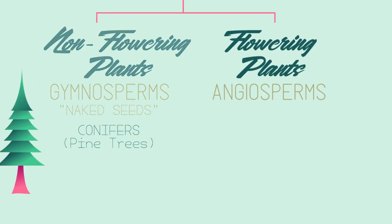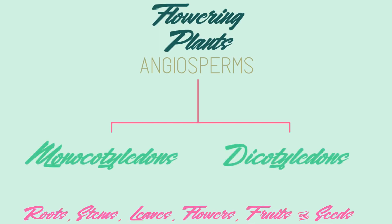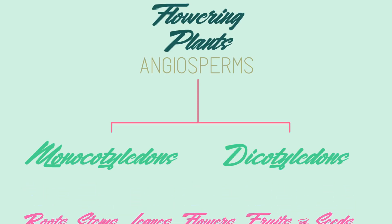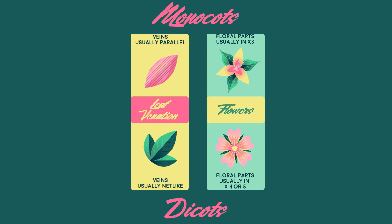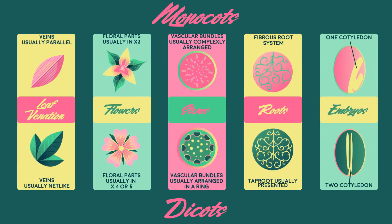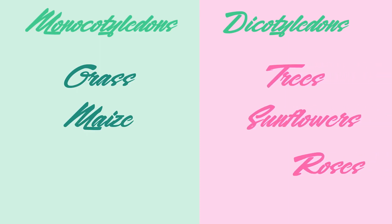Now for angiosperms — the largest and most diverse group in the plant kingdom. Angiosperms consist of two major groups: monocotyledons and dicotyledons. These groups differ with respect to their roots, stems, leaves, flowers, fruits, and seeds. Some observable differences are that monocots have parallel veins and petals in groups of three, whereas dicots have net-like veins and petals in groups of four or five. Grass and maize are examples of monocots, whereas trees, sunflowers, and roses are examples of dicots.